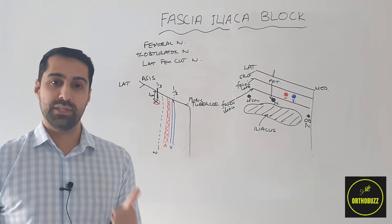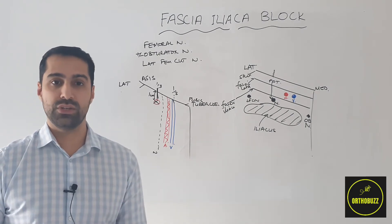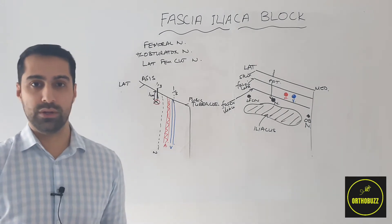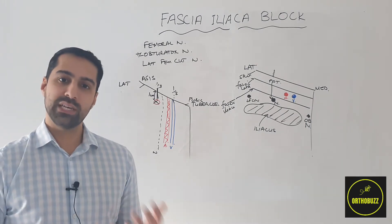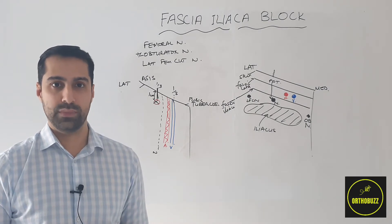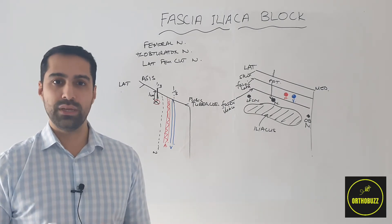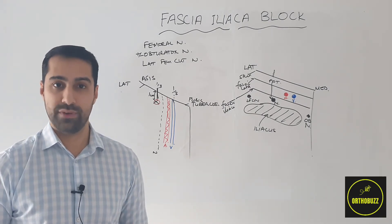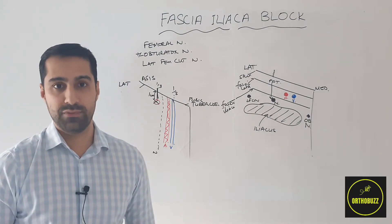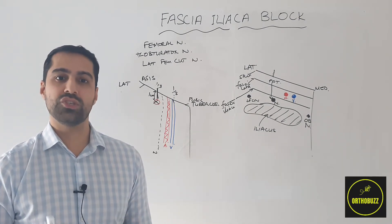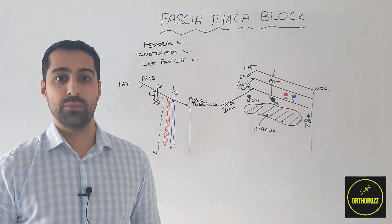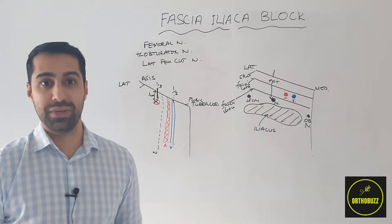The first step is making sure that we have the correct patient and the correct indication for the fascia iliaca block. As said previously, this will typically be for a patient with a hip fracture. It can also be used in paediatric patients with femoral fractures to provide analgesia before putting on a cast, although this should only be done after consultation with the orthopaedic or paediatric team.